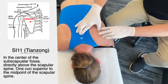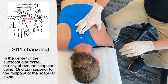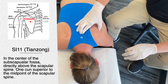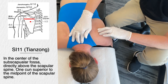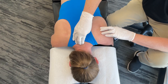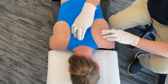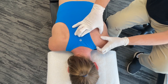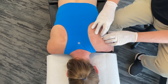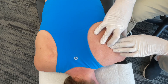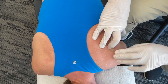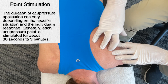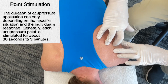The next point is small intestine 11. It's located in the region of the scapula, in the depression in the center of the subscapular fossa, level with the fourth thoracic vertebra. We go down to T1, T2, T3, approximately T4, then across to the subscapular fossa. It's quite tender there. We stimulate this for about 30 seconds to a minute. So far we have gallbladder 34, small intestine 10, and small intestine 11.